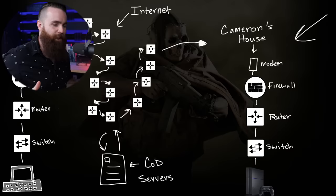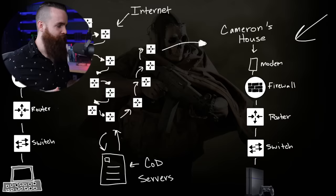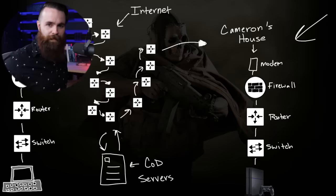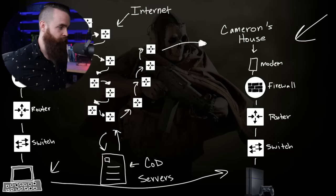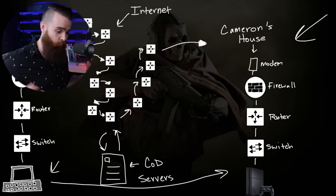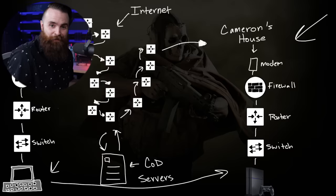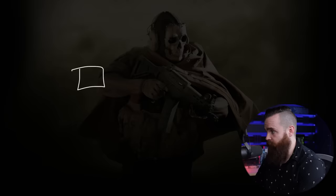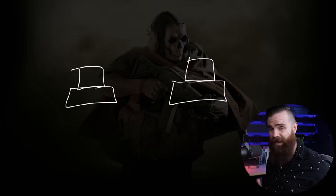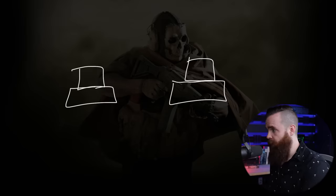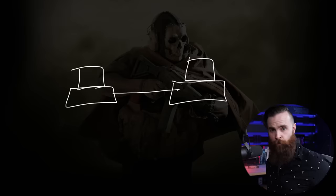The networking we have now is pretty complex, but the goal is the same as it was 20, 30, 40 years ago: I want my computer to talk to another computer, I want to share data, I want to hang out. That's how networks came about — one computer saying, 'I have all this data, I want to share it with another computer, but I can't do that without a lot of effort. Let's figure out a way to connect ourselves.' And that's where networking was born.